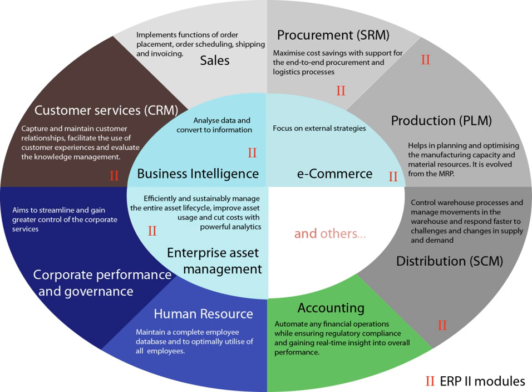Enterprise Resource Planning is the integrated management of core business processes, often in real-time and mediated by software and technology. ERP is usually referred to as a category of business management software—typically a suite of integrated applications—that an organization can use to collect, store, manage, and interpret data from these many business activities.